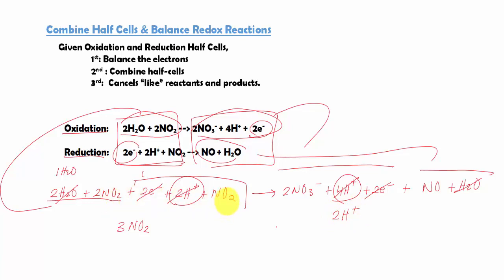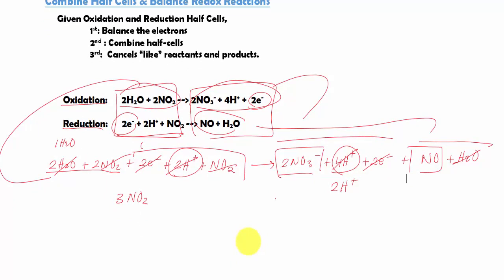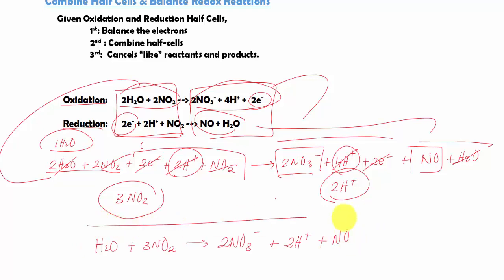After all cancellations, we rewrite everything into a clean final reaction. On the reactant side: 1 H₂O and 3 NO₂. On the product side: 2 NO₃⁻, 2 H⁺, and 1 NO. This is our balanced redox reaction.